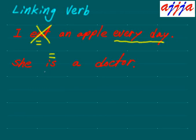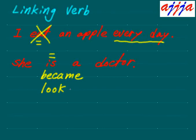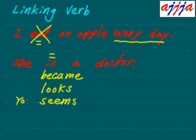What else? She became a doctor. That's a linking verb too. What about 'looks'? She looks like a doctor — same thing, you can replace it with an equal sign. Maybe 'seems' — you seem sick or tired. Also 'look' — you look tired. I became tired — same thing. All those are linking verbs.